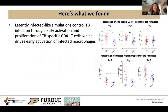So far, we found that latently infected individuals, or LTBI for short, control TB infection through early activation and proliferation of TB-specific CD4+ T-cells. Here we can see that the LTBI-like individuals have a higher percentage of TB-specific CD4+ T-cells that are activated compared to those who have never been exposed to TB before, or naive individuals.